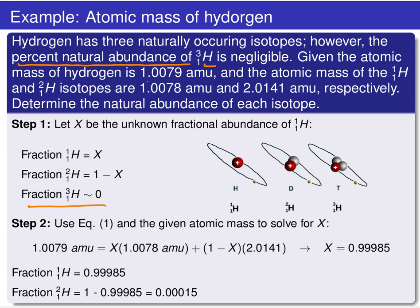Given that the mass of hydrogen from the periodic table is 1.0079 AMU, and the masses of the two isotopes present in appreciable quantities are 1.0078 AMU and 2.0141 AMU, we know the mass of each isotope and the total average mass of hydrogen. Using that information, our goal is to determine the natural abundance — so now natural abundance is our unknown.